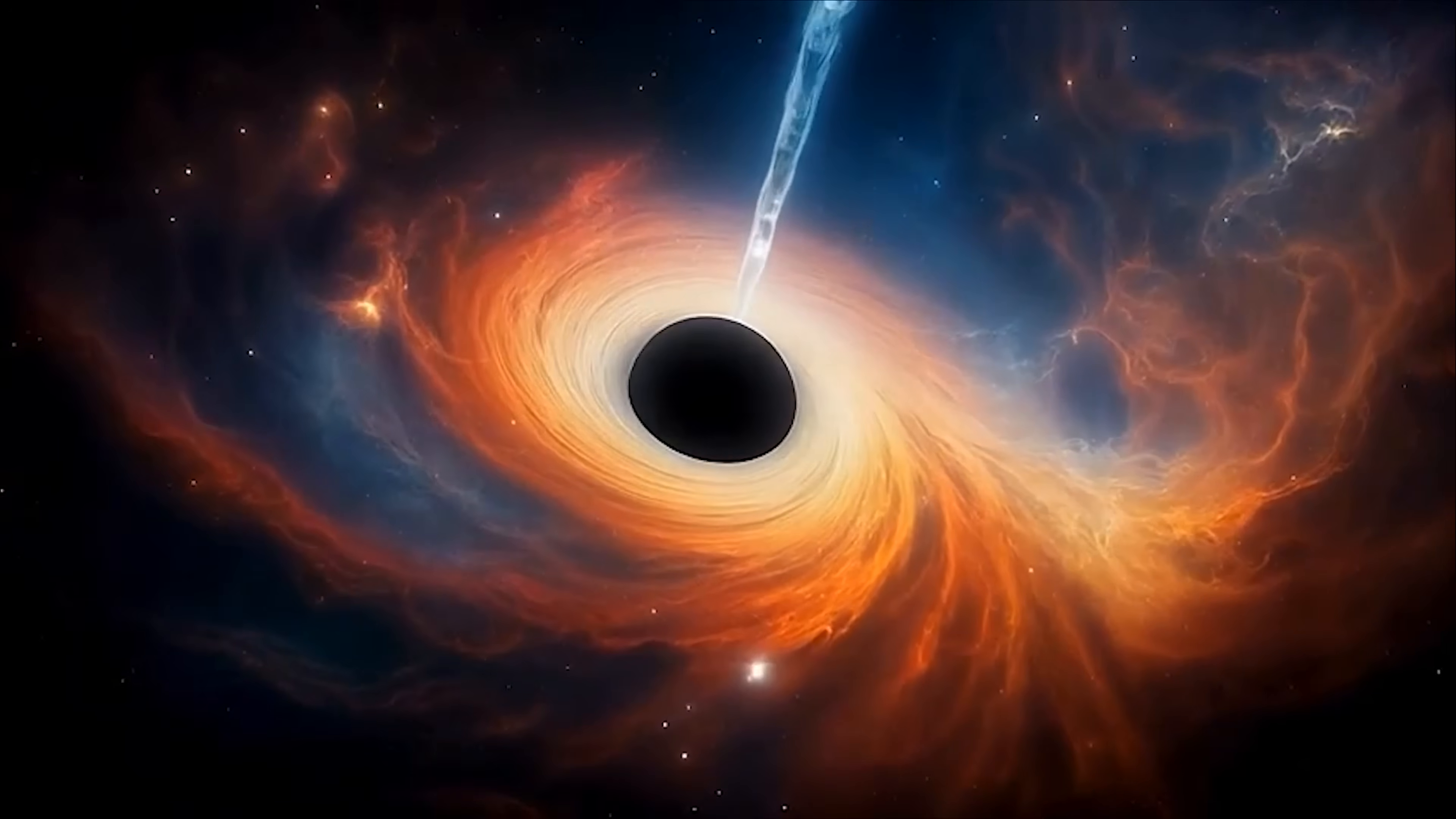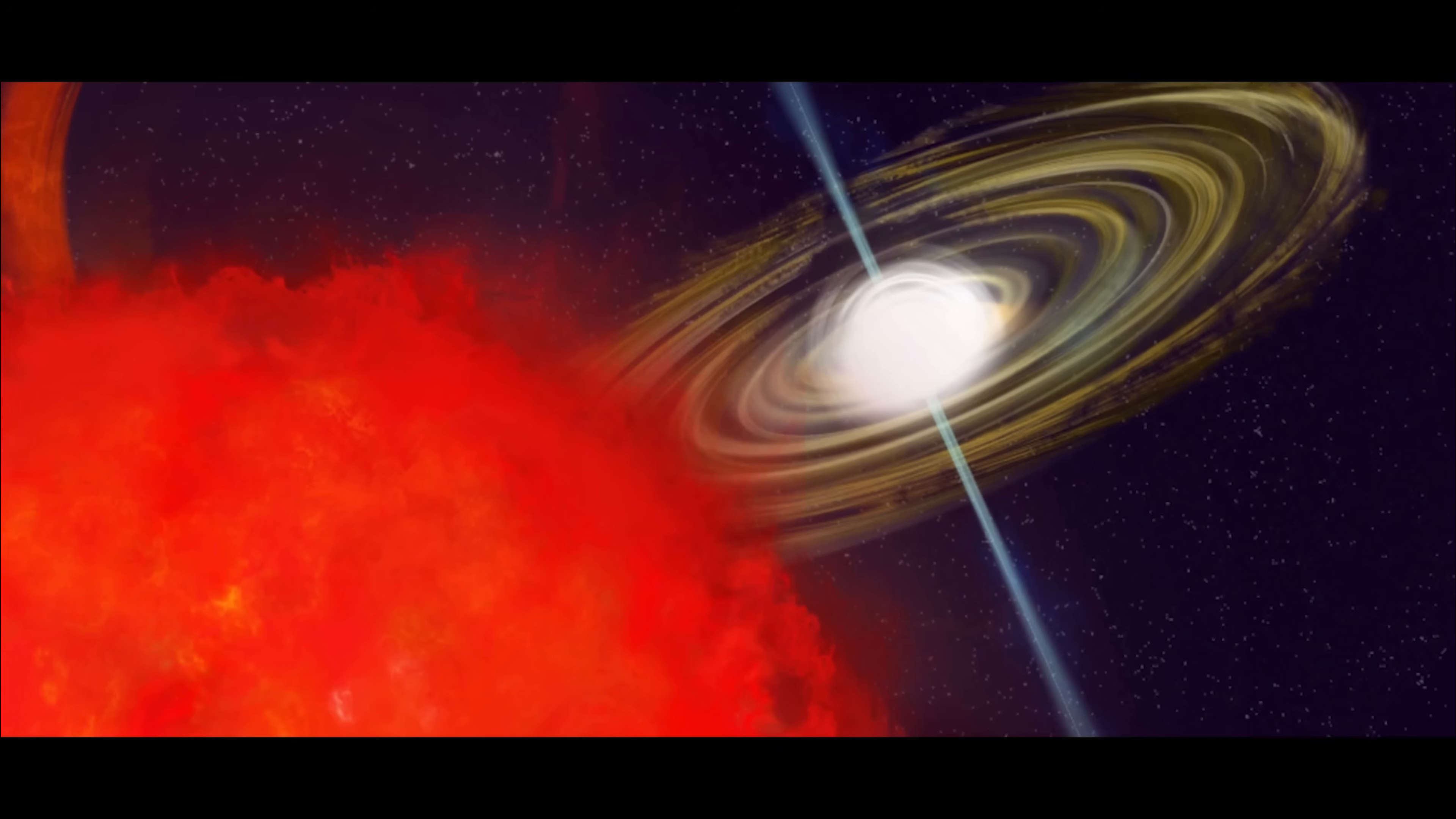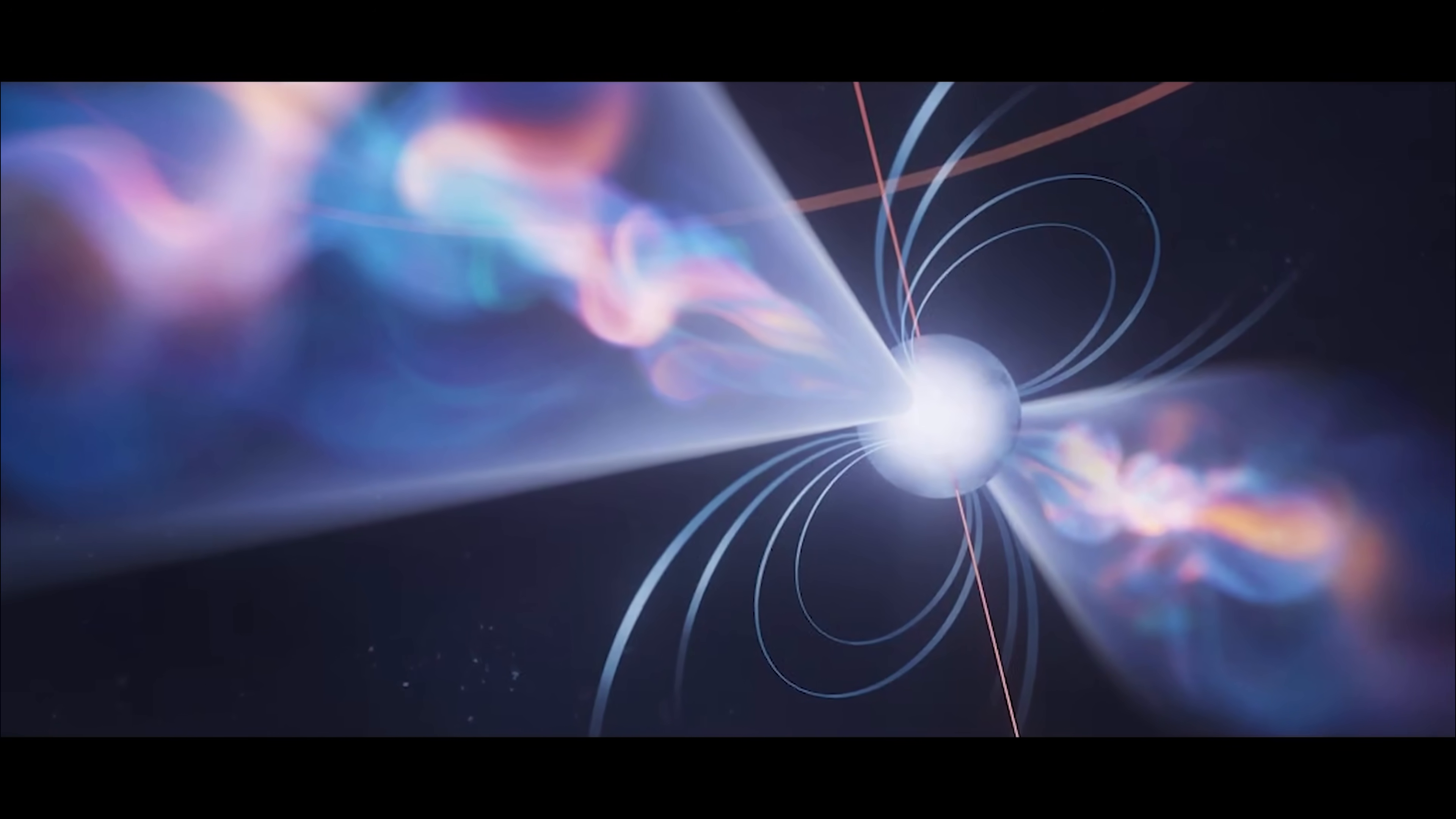The team turned to pulsars for help. Pulsars are like cosmic lighthouses, ultra-dense, spinning remnants of dead stars that emit incredibly precise beams of radiation. Pulsars are created at the end of a star's life, so to understand how that happens, we really quickly have to understand the rest of a star's life. So stars are basically giant fusion reactors. They spend most of their lifetime fusing hydrogen into helium in their cores.